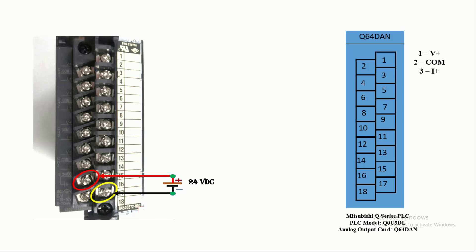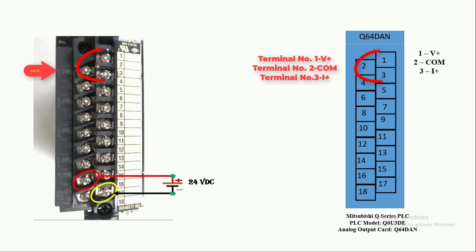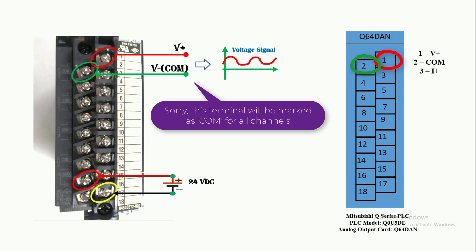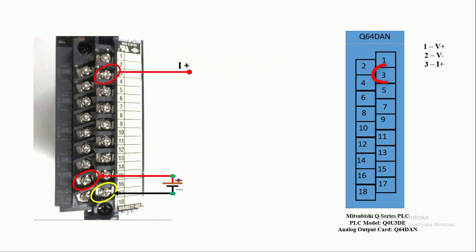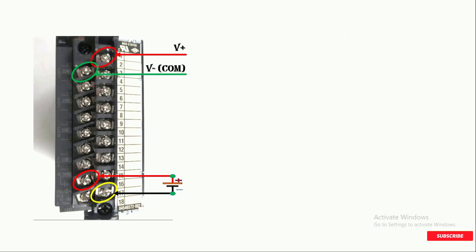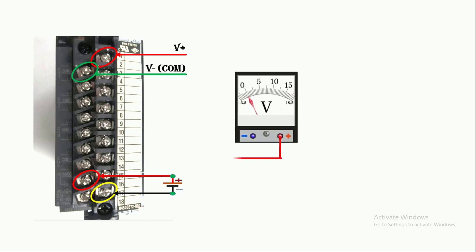Then select the channel of the analog output card from which you want to get the analog signal. For channel one, you will find three connection terminals: V+, V-, and I+. If you want voltage signal, use V+ and V- terminals. If you want current signal, use I+ and V- terminals. In this project we will load a program to the CPU to create voltage signal from channel one. To measure the voltage signal, connect a voltmeter's positive lead to V+ and negative lead to V- of this channel.